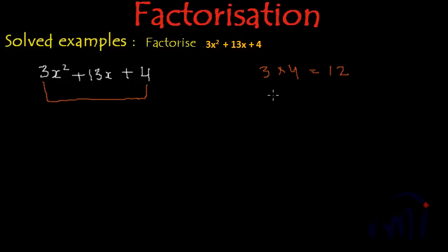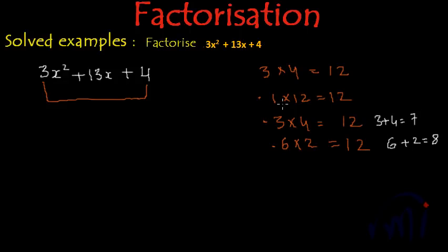So factors of 12 are 1 and 12 equals 12, 3 and 4 equals 12, 6 and 2 equals 12. So these are the three pairs of factors of 12. But here if we do 6 plus 2 we get 8, 3 plus 4 gives us 7, and 1 plus 12 gives us 13. So this is the desired pair of factors which we were looking for. These two factors when added give us 13.